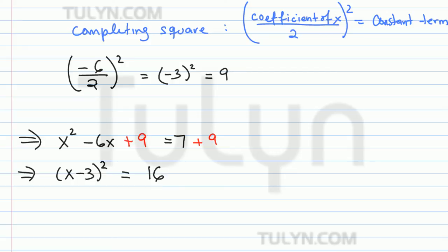So then we want to solve for x. We take the square root of both sides. On the left, the square and the square root cancel out, and we end up getting x minus 3 is equal to plus or minus the square root of 16, which is just 4.